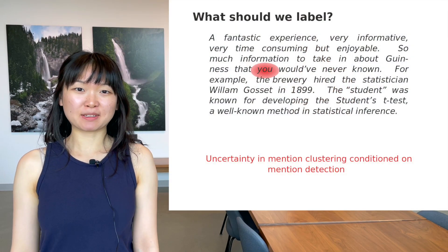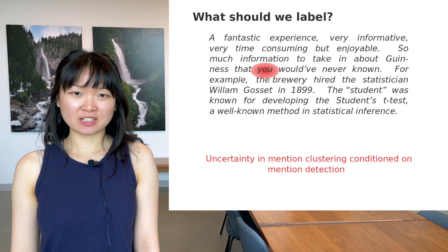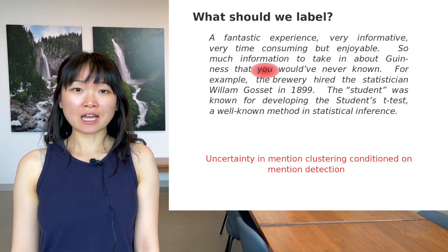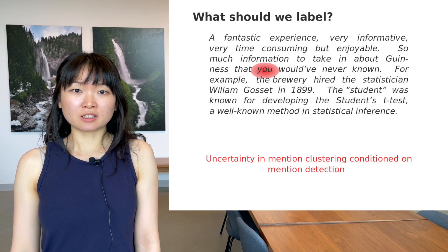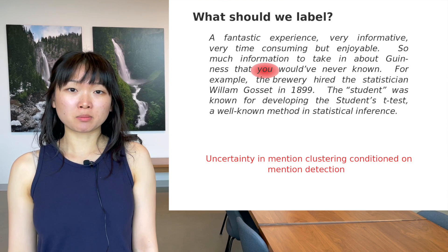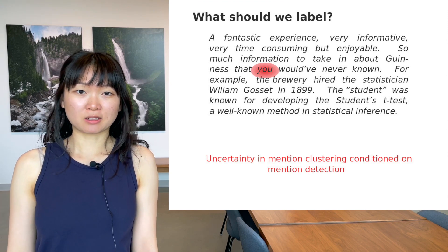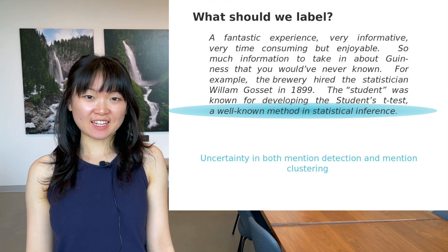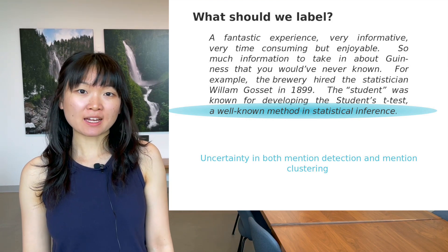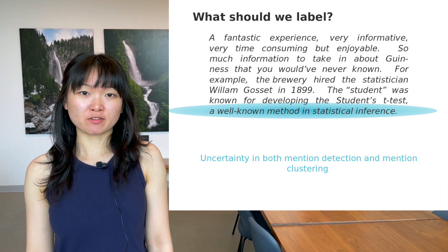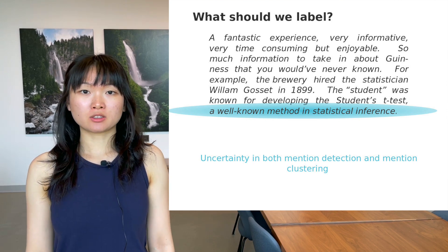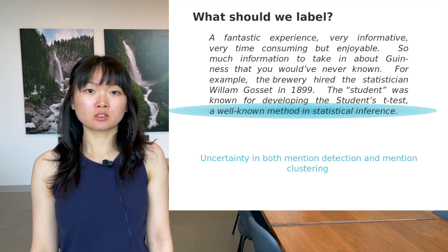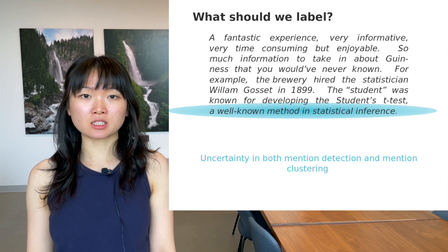Third, we may want to consider labeling spans that confuse mention clustering conditioned on mention detection. In other words, there are spans that are clearly entity mentions, but are confusing to link. This strategy will sample pronouns, for example, like the word 'you'. Lastly, we want to label spans that challenge both mention detection and mention clustering. The span 'a well-known method in statistical inference' is lengthy and may be hard for the model to detect as an entity mention in its entirety. It is also hard to link it to 'student's t-test' if the model hasn't trained on similar data.